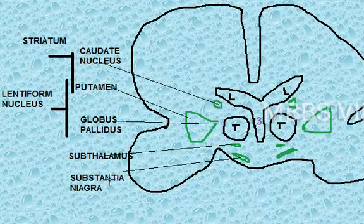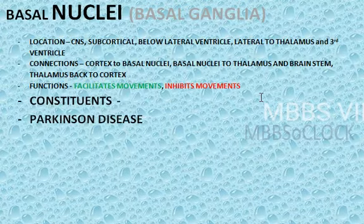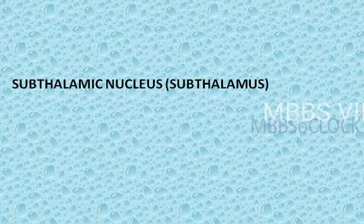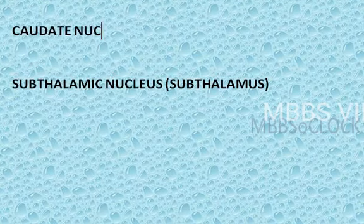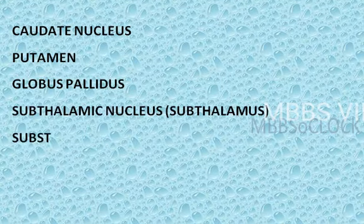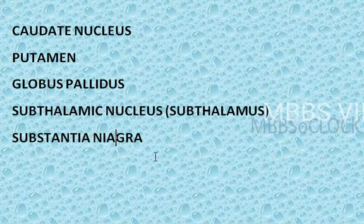There is a correction here: don't say subthalamus — say subthalamic nucleus, which is a part of basal nuclei. The subthalamic nucleus is contained within the subthalamus, so you should say subthalamic nucleus, not subthalamus. So the five constituents of basal nuclei are: caudate nucleus, putamen, globus pallidus, subthalamic nucleus, and substantia nigra.